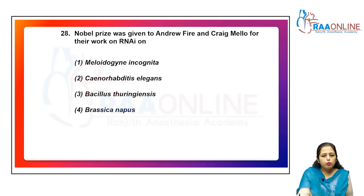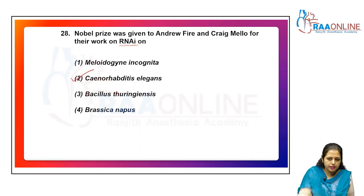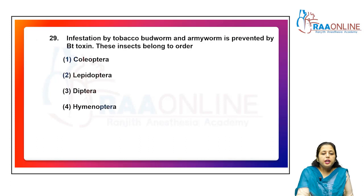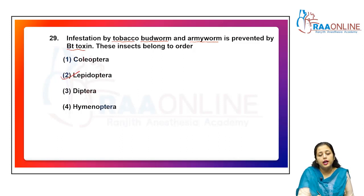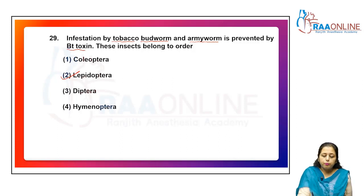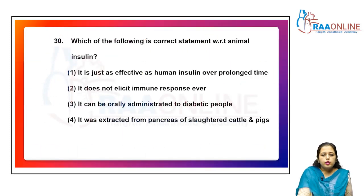The Nobel Prize was given to Andrew Fire and Craig Mello for their work on RNA interference using Caenorhabditis elegans. Infestation by the tobacco budworm and the army worm is controlled by Bt toxin. Both of these insects belong to the order Lepidoptera. This is a direct question to memorize.